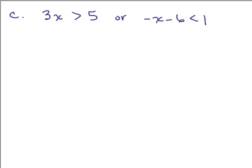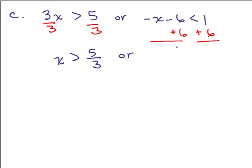On to part c. So we've got 3x is greater than 5 or negative x minus 6 is less than 1. So for each of those, let's solve. So for this first one, we're going to divide both sides by 3, so x is greater than 5 thirds. Or, now over on this side, we could multiply both sides by negative 1 first to get rid of the negative signs or we could just add 6 to both sides first. I'm going to do it that way. So you have negative x is less than 7.